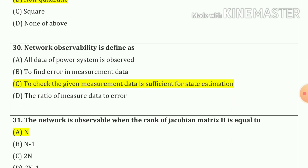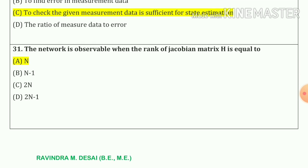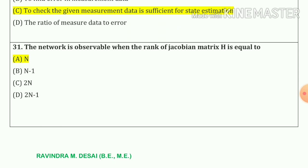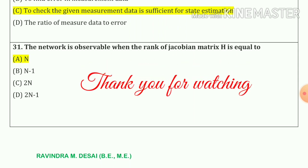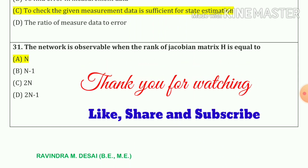Question number 30: Network observability is defined as checking whether the given measurement data is sufficient for state estimation. Option number c is our correct answer. Question number 31: The network is observable when the rank of Jacobian matrix H is equal to capital N. So our answer is option number a.